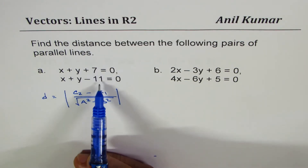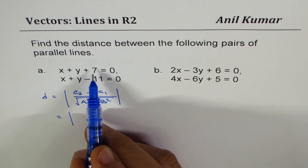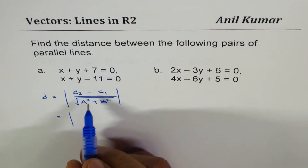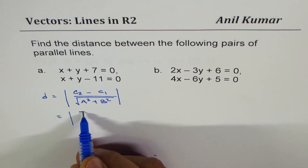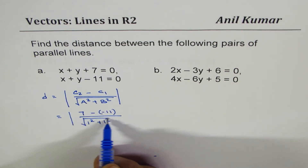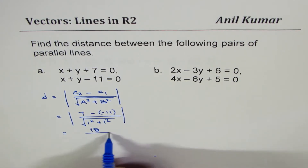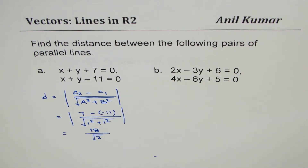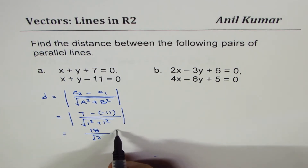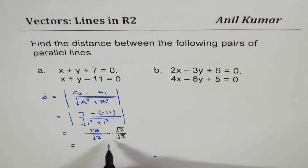Here a and b are the coefficients of x and y, and c1 and c2 are the constant terms. Applying it to the first set: |7 - (-11)| divided by √(1² + 1²). That gives 18 over √2. Rationalizing by multiplying by √2/√2, dividing 18 by 2, we get 9√2 as the answer.